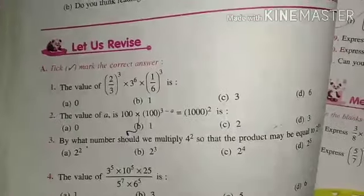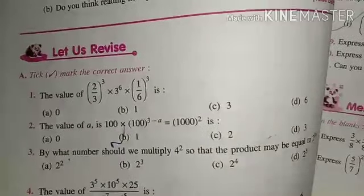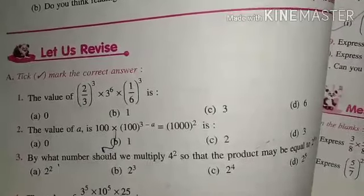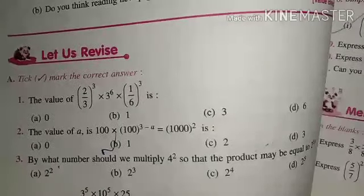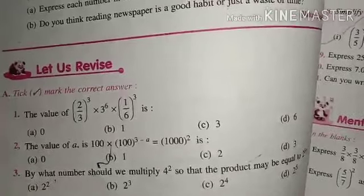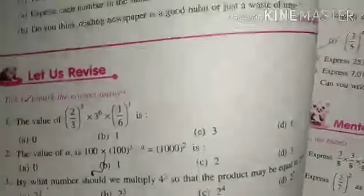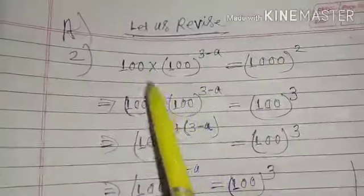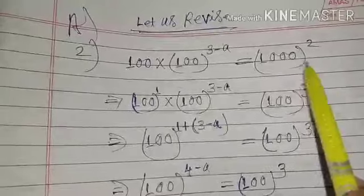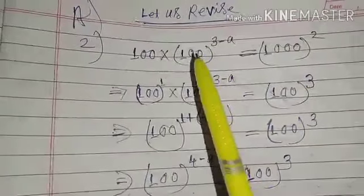Question number one you can do easily. For question number two, the value given is (100 × 100) whole to the power (3 − a) equals (1000) whole squared. We have to find the value of a from here. So how can you find out the value of a? Let's see.